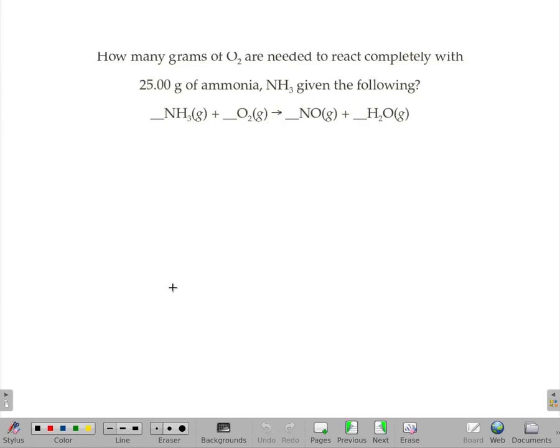How many grams of O2 are needed to completely react with 25 grams of ammonia given the following equation? I know I'm going to need to balance the equation because I need a stoichiometric ratio between the NH3 and O2.